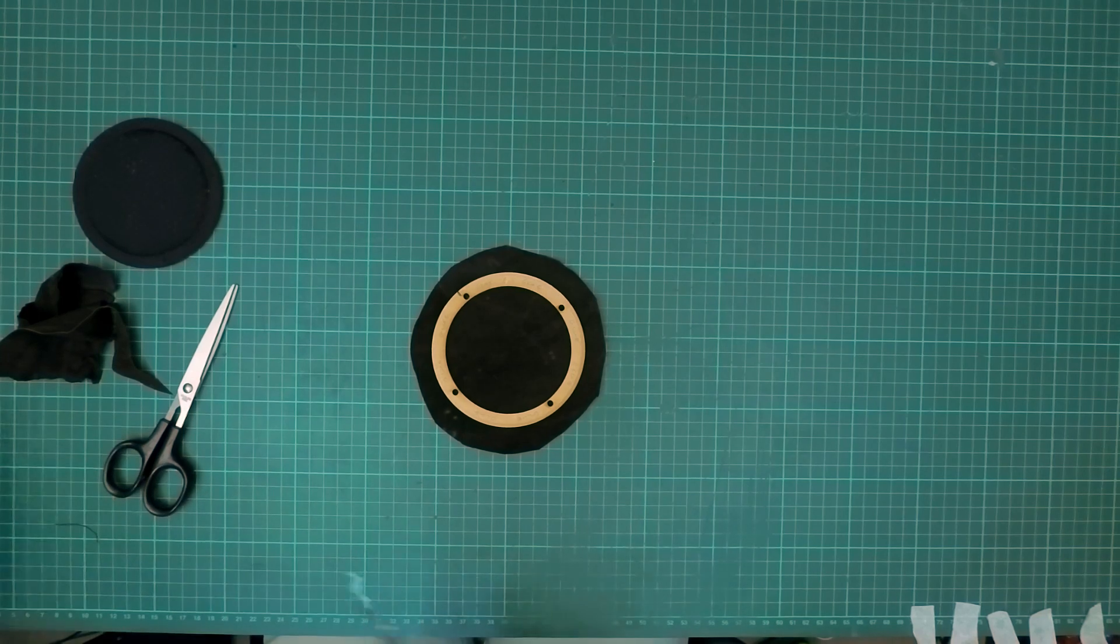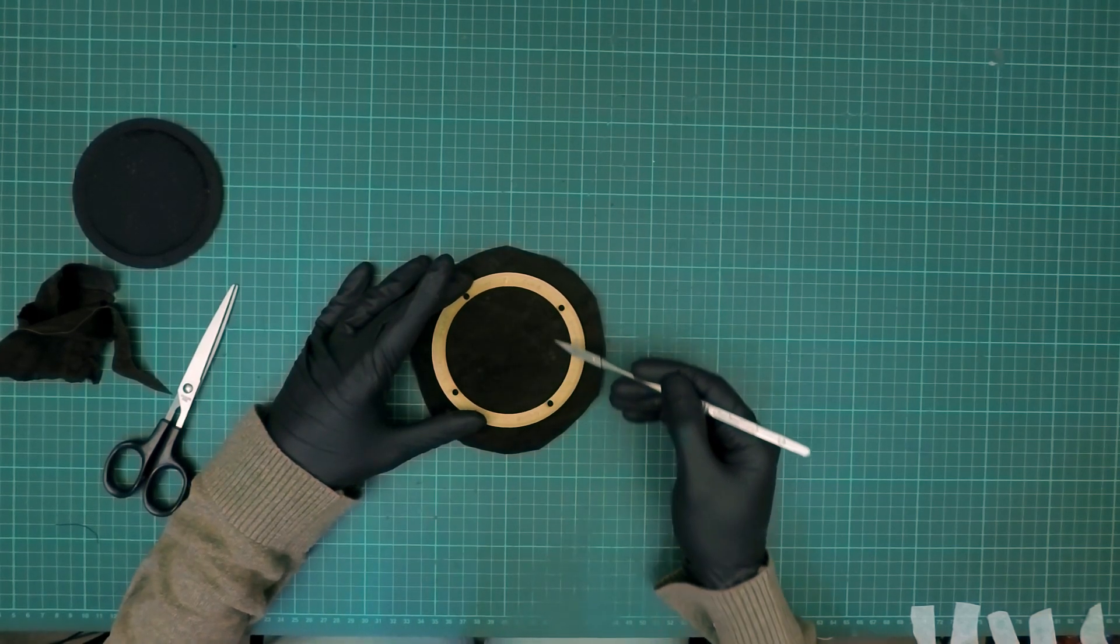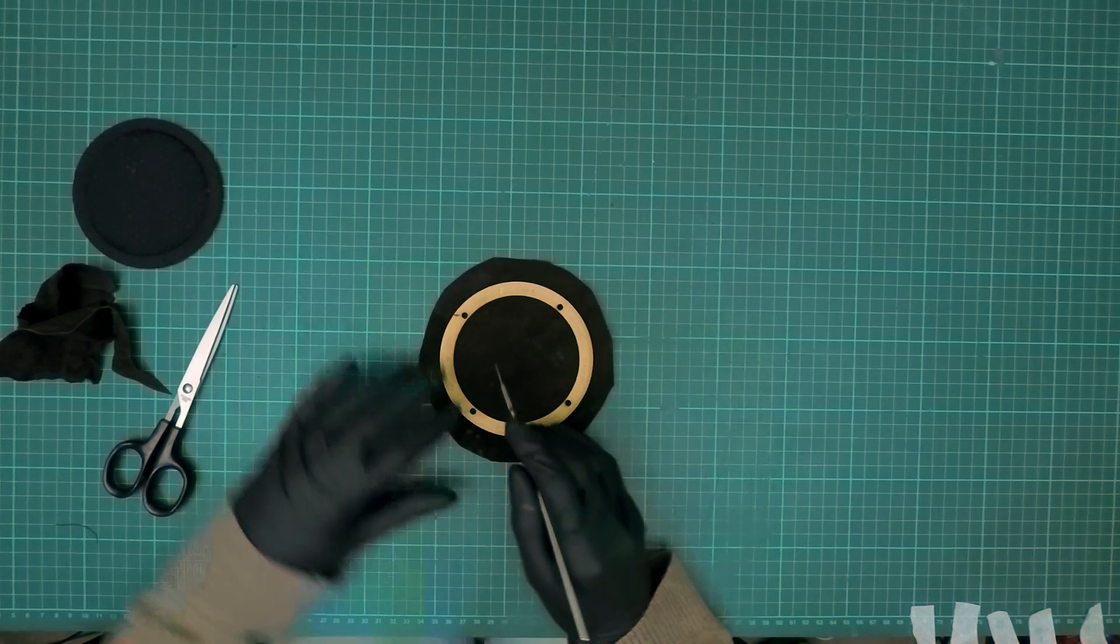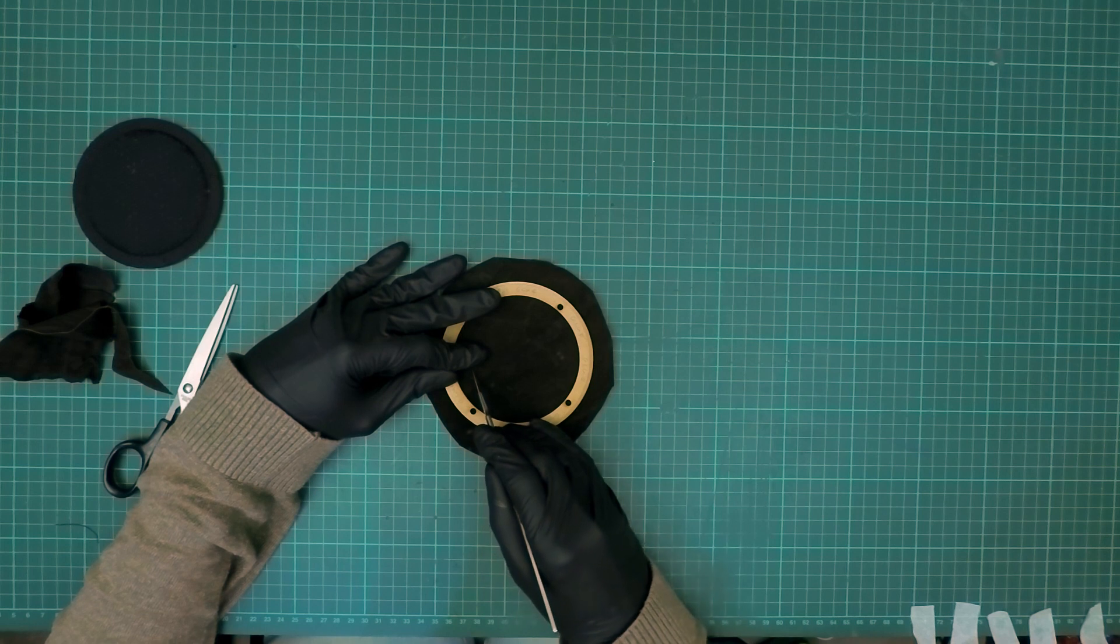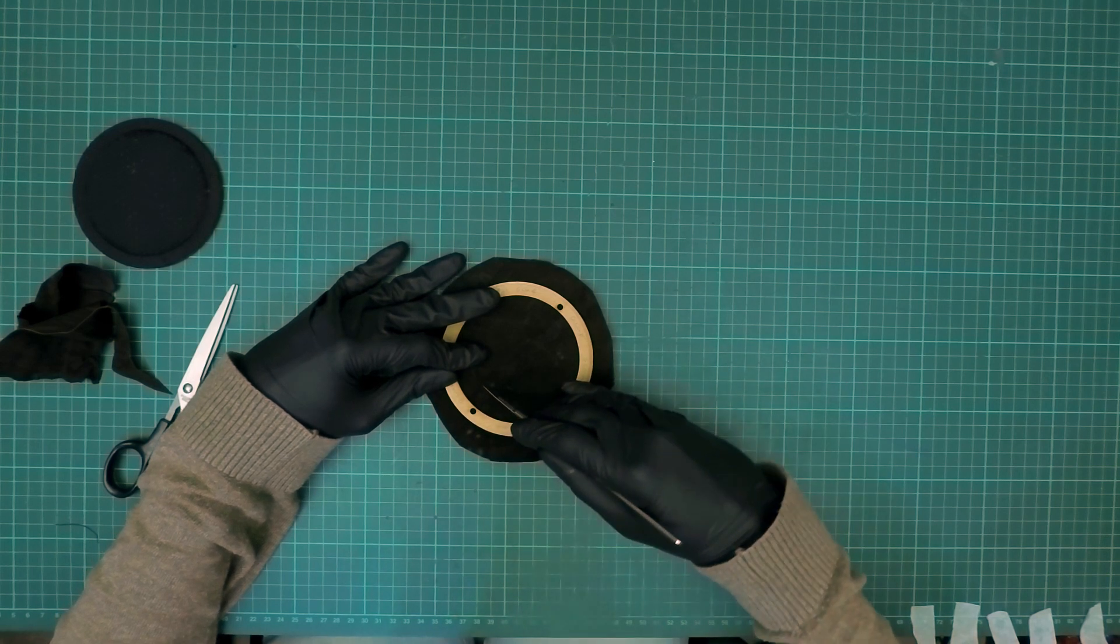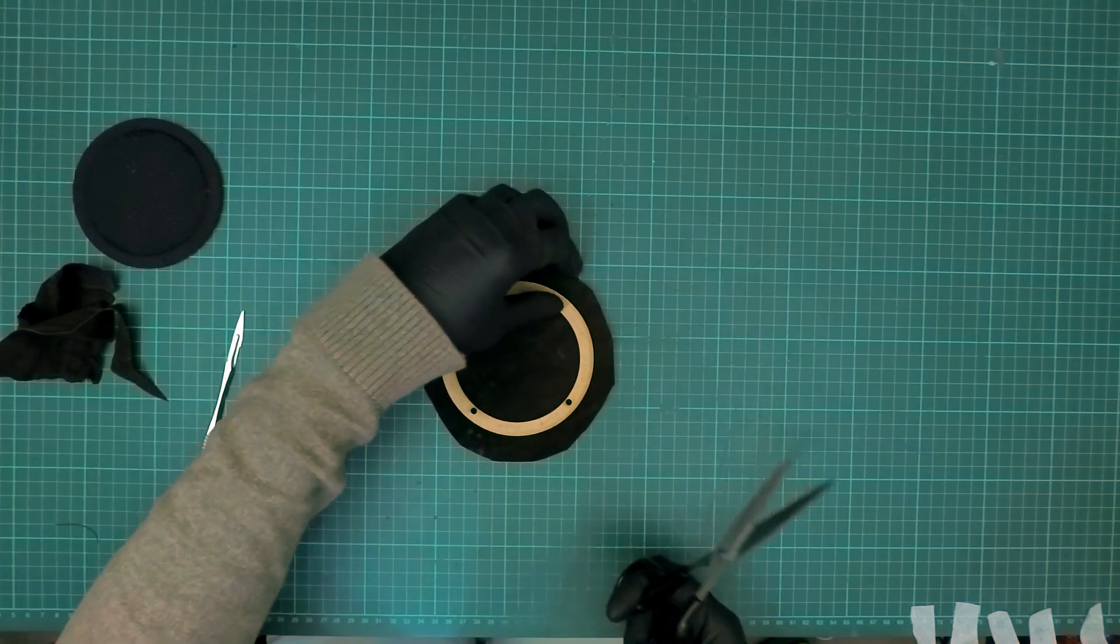Next step is to remove the circle from the inside so you have some leather to wrap on the inner edge. Simply create a cut and use a pair of scissors to cut the circle, leaving approximately half an inch to the inner edge.